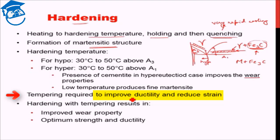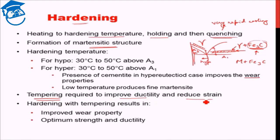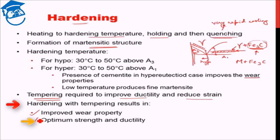That is done by a heat treatment process known as tempering. Tempering must always be carried out in combination with the hardening process. Tempering results in improving ductility and reducing internal strain at the cost of slightly losing strength. So hardening together with tempering gives you improved wear properties and optimum strength and ductility.